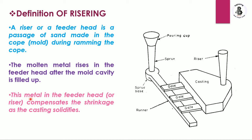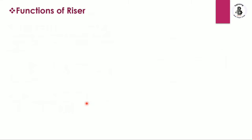This metal in the feeder head or riser provides compensation for shrinkage as the casting solidifies. During solidification of molten metal in the mold cavity, this extra molten metal is supplied from the riser to provide compensating material during the solidification process. That is the most important function of a riser in a sand casting process — to compensate the shrinkage as the casting solidifies.